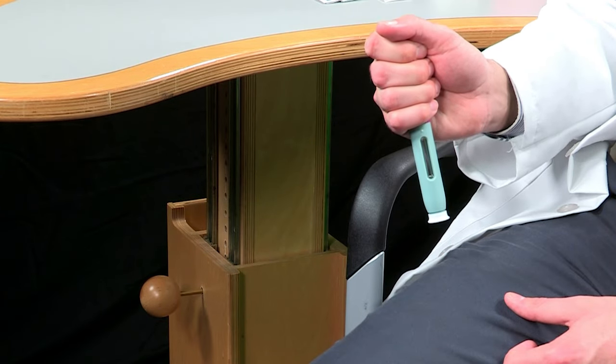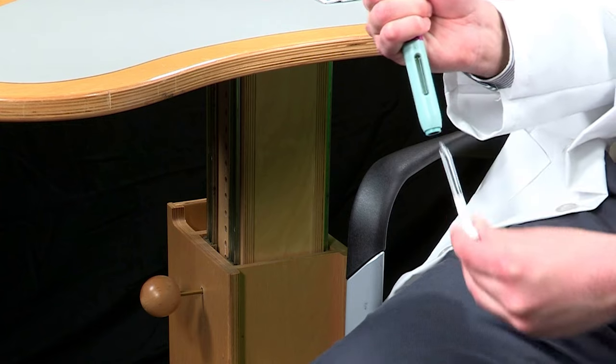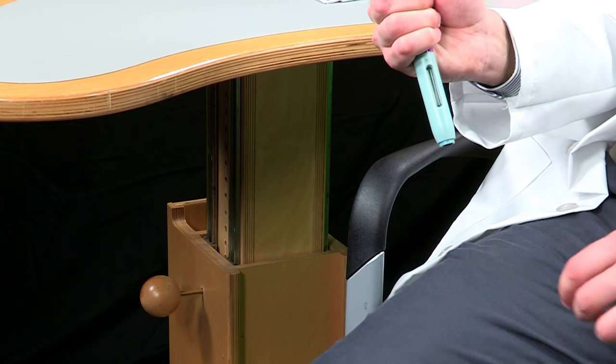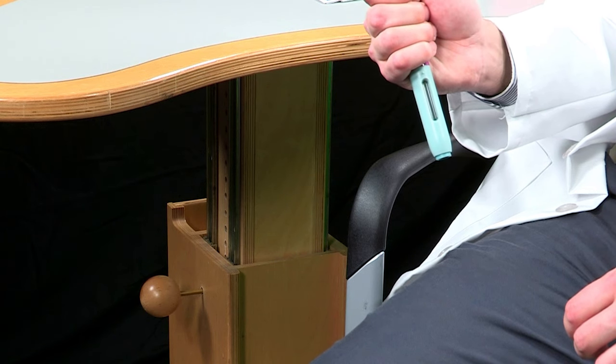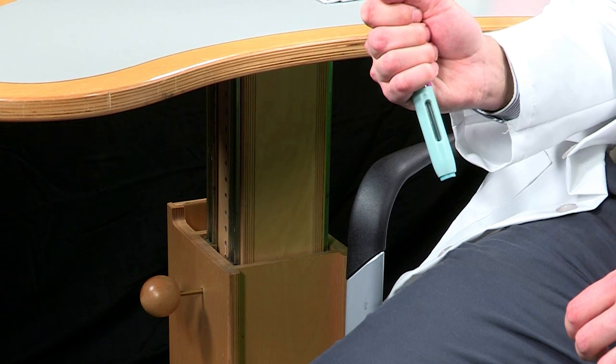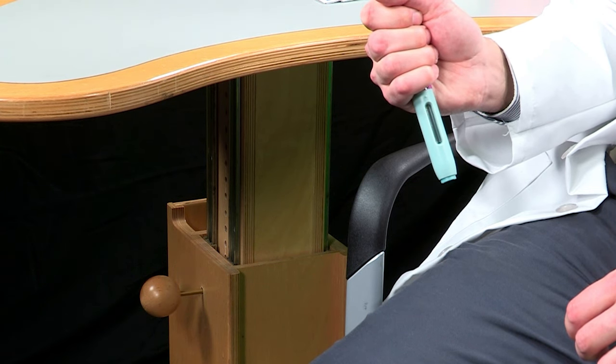When you are ready to inject, pull the white cap straight off. No need to twist or bend the white cap. Don't pull the white cap off more than five minutes before you inject as it could dry out the medication. Don't try to put the white cap back onto the autoinjector even after injecting.